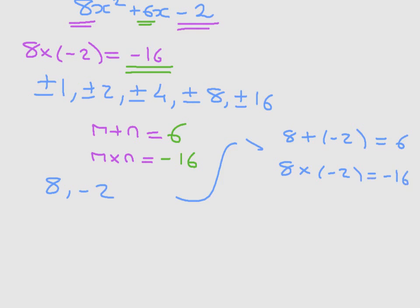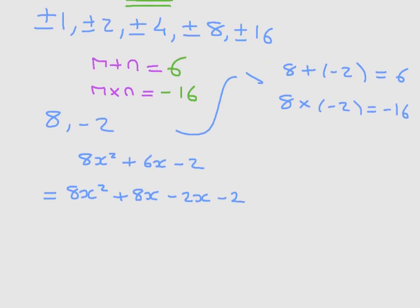This is going to allow us to split the middle term. Remember, our quadratic was 8x squared plus 6x minus 2. And what we're going to do now is write this as 8x squared plus 8x minus 2x minus 2. This is known as splitting the middle term. This term here, or rather these two terms, 8x minus 2x, are the same thing as this term above. That's 6x. And we found the 8 and the 2, or rather the 8 and the negative 2, using what we just did here. That's where we got them from.